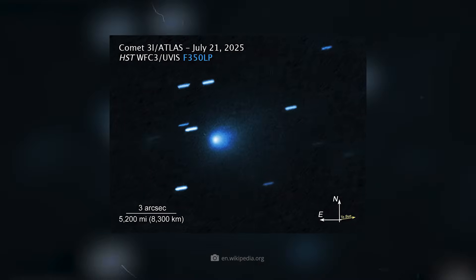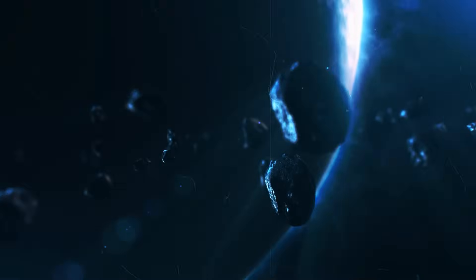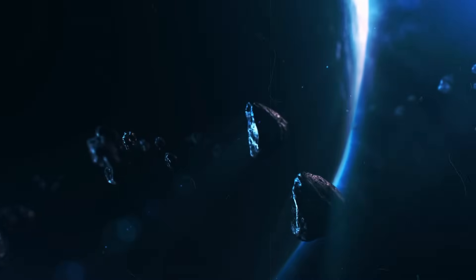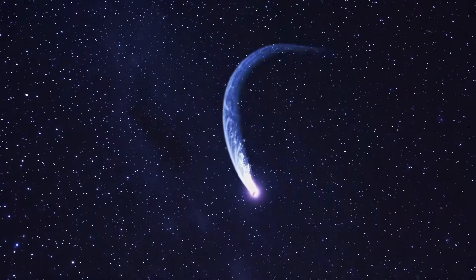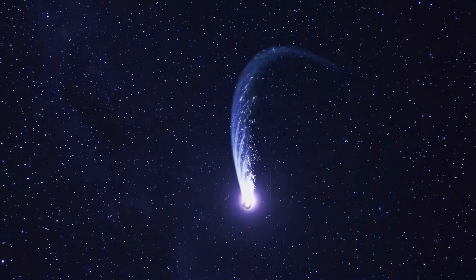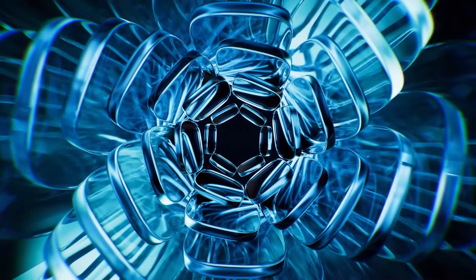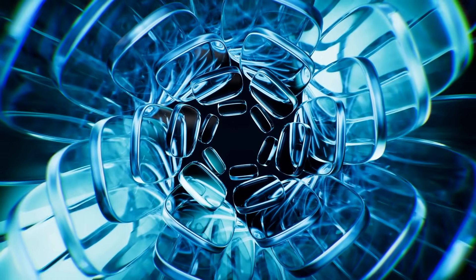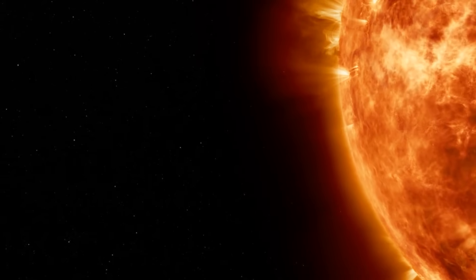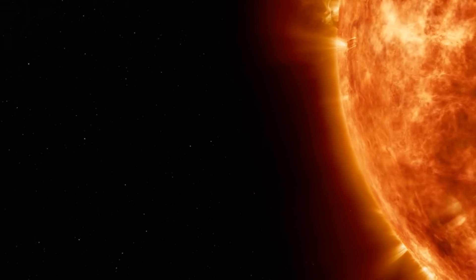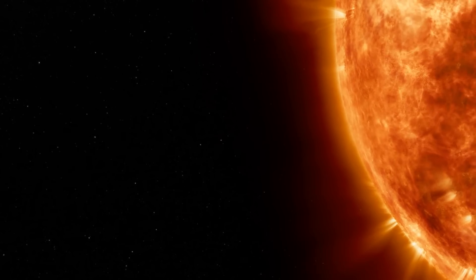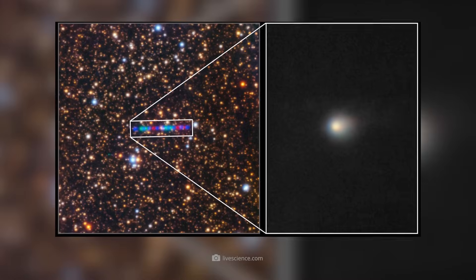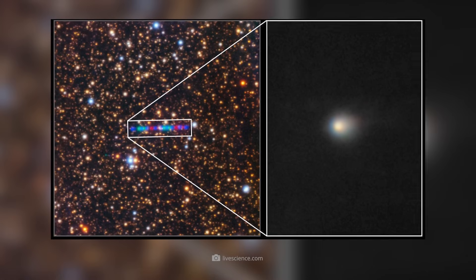3i Atlas appears to have a forward-pointing tail. Although this rare phenomenon has also been observed in some comets far from the Sun, this third tail is another sensation in an interstellar visitor of this clarity. One explanation could be that the ice on the side of the nucleus facing the Sun sublimates extremely quickly. This carries dust with it, which is not blown away by the solar wind, but ejected directly along the trajectory. This creates a forward tail that looks like a dust plume from a rocket engine.